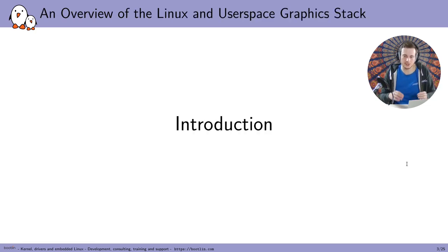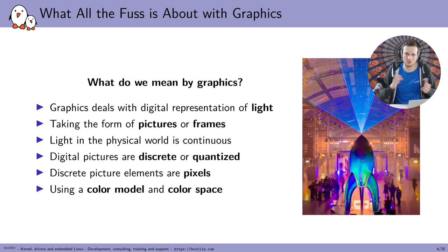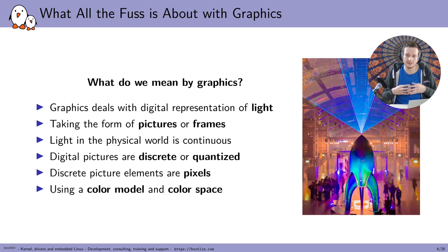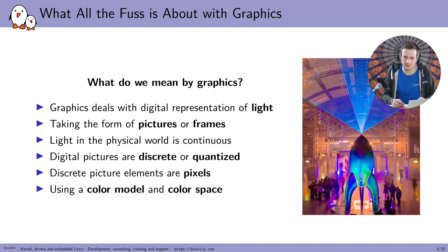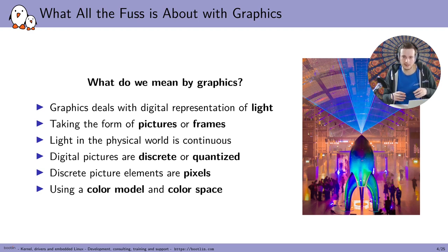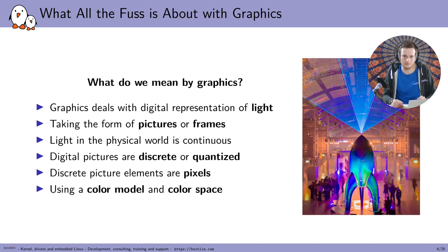Let's begin with a bit of an introduction about graphics in general. Graphics really deals with representing light — it's a way to represent pictures digitally, and pictures are really just a representation of light. A synonym for pictures that I'll be using is frames. Since it's digital, we have a finite number of elements composing our picture — these elements are called pixels, for picture elements. We represent the colors of each pixel using numbers, and to do this we first define what we call a color model.